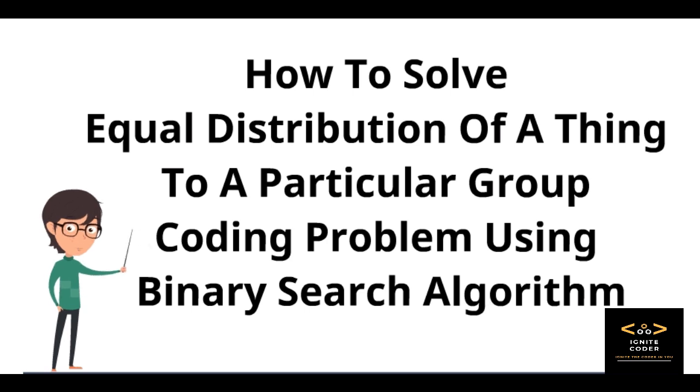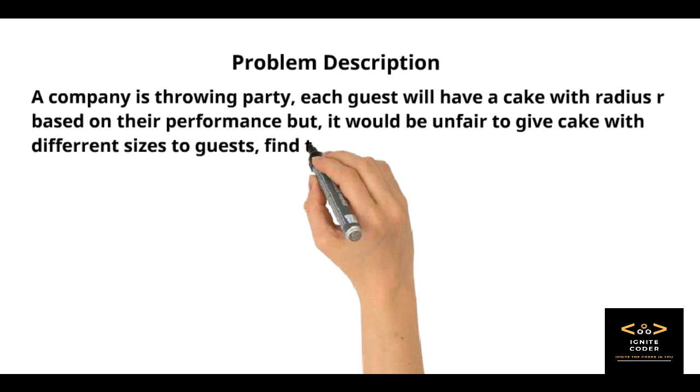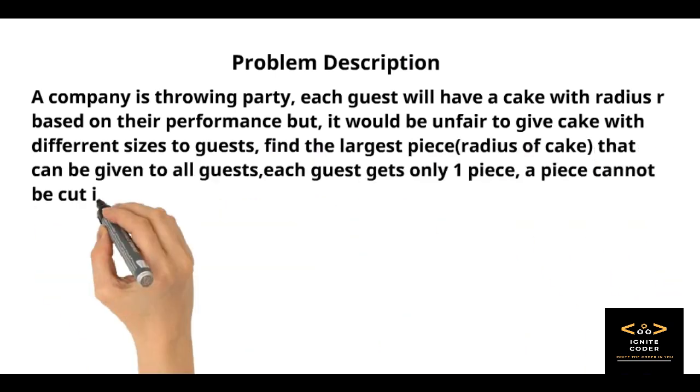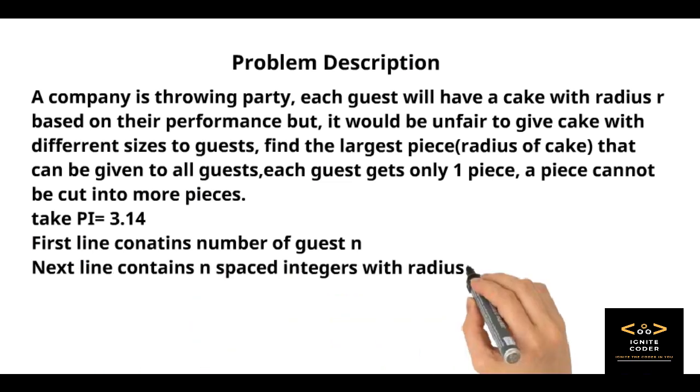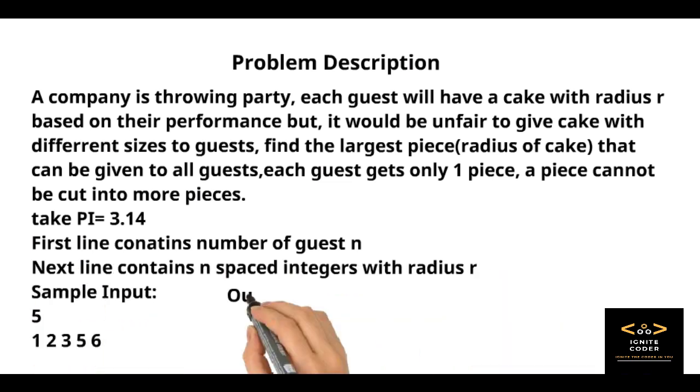Now let's understand the problem fully. The company is throwing a party. Each guest will have a cake with radius R based on their performance, but it would be unfair to give cakes with different sizes to guests. So find the largest piece that can be given to all guests, such that each guest gets only one piece and a piece cannot be cut into more pieces.